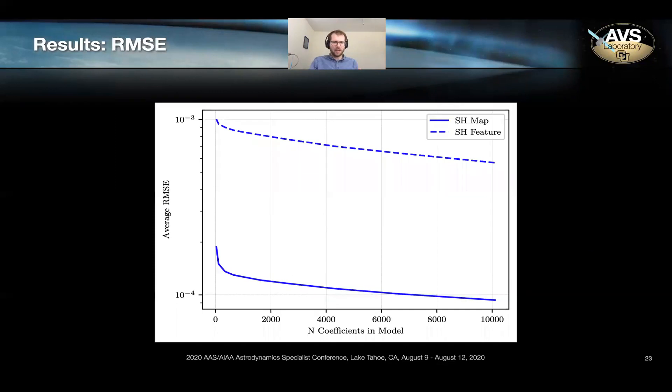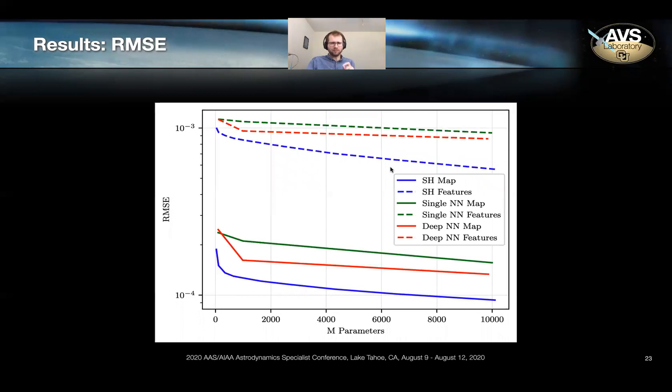Looking at this in a slightly different light, we return to this 2D plot of the average error in the features and the entire map. And we wanted the artificial neural networks to outperform, that is, to be lower than the spherical harmonic curves. But what you find is when you instead plot the artificial neural networks, they do significantly worse than spherical harmonics. You see that the deep neural networks are better than the shallow networks, but neither outperform spherical harmonics.